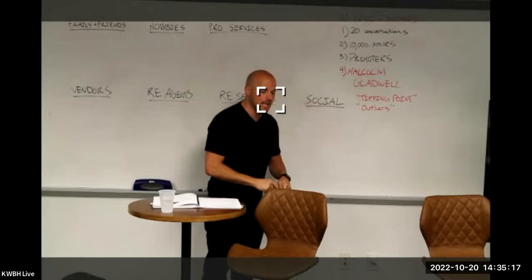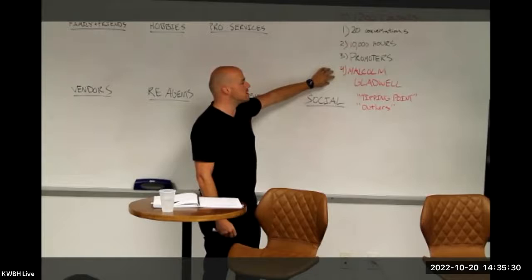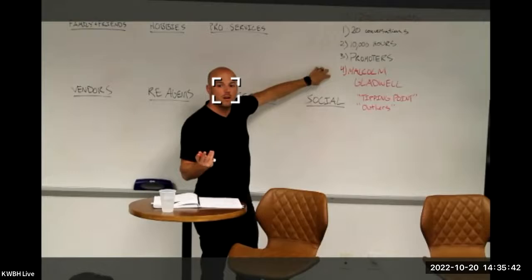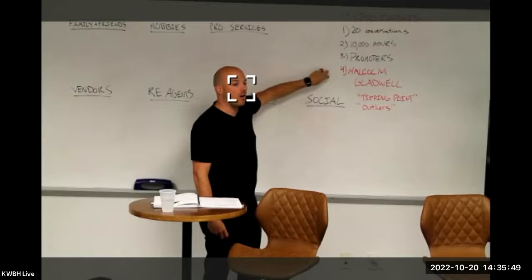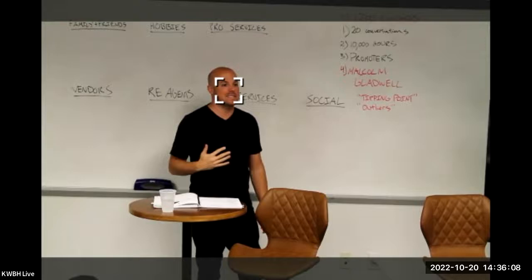I highly recommend you read these books by Malcolm Gladwell. They're New York Times bestsellers — some of the most-read books ever. They're written at roughly a seventh or eighth grade reading level, so it's a super fast read. Although his background is in psychology, it's basically a unique blend of personal development, sociology, psychology, and macro economic theory.